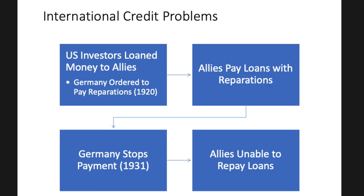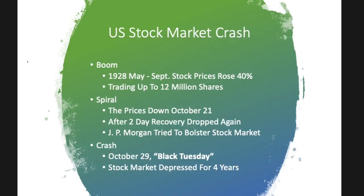More importantly, perhaps, were the financial ties to European governments. During World War I, U.S. investors had loaned money to the allies. After the war, the allied nations — France, England, and Italy — had ordered Germany to pay war reparations, and the allies were paying off their American loans with that reparation money. But in 1931, when the Great Depression affected Europe, Germany stopped making payments and never resumed until after World War II. Because Germany stopped paying, the allies were unable to pay their U.S. loans, contributing to this circle of international credit debt that also led to the Great Depression.